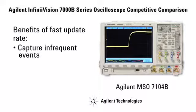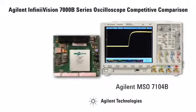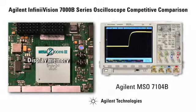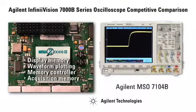The first question most people ask when they see this is, why don't other scope vendors just increase their update rates? If it were simple, of course they would. Agilent's blazing fast custom MegaZoom 3 IC technology is the heart of our InfiniVision scopes. It incorporates display memory, waveform plotting, memory controller, and acquisition memory capabilities that lose precious time in chip-to-chip communication in other architectures.